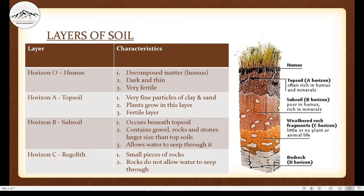Then there is Horizon A, that is topsoil. This is the first named layer and it is topsoil. It is made of very fine particles of clay and sand. Plants grow in this layer — we see plants above the surface, but the roots extend into the topsoil and get their minerals, water, and air that has seeped in from this layer. It is also a very fertile layer, rich in humus and minerals.